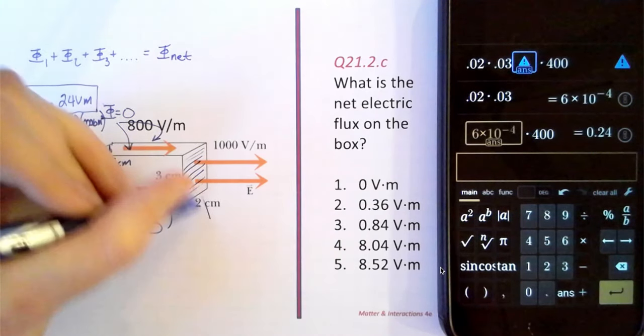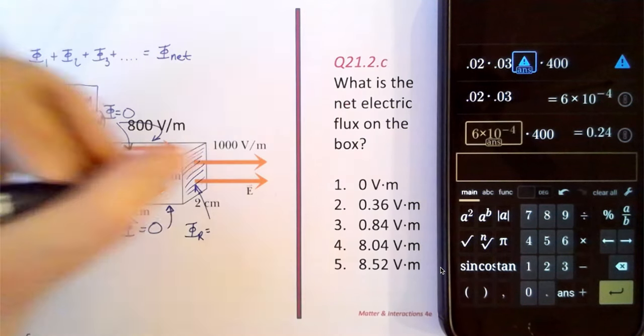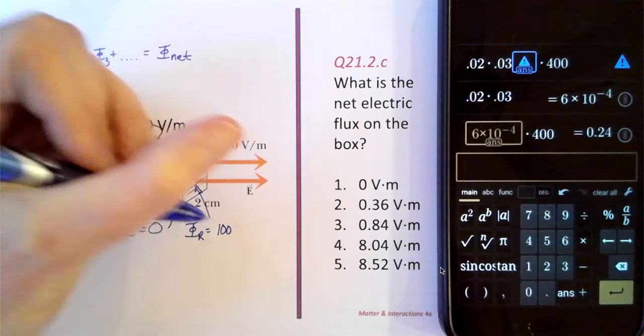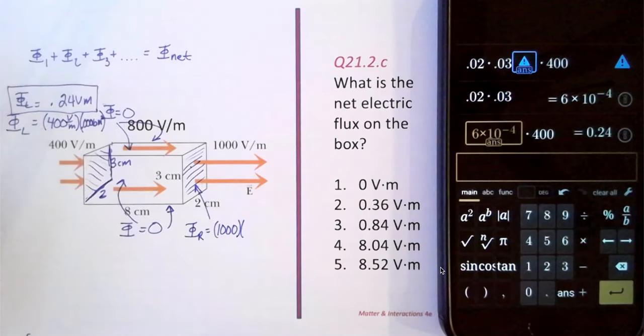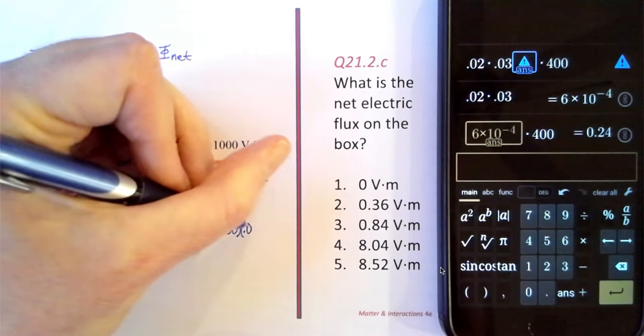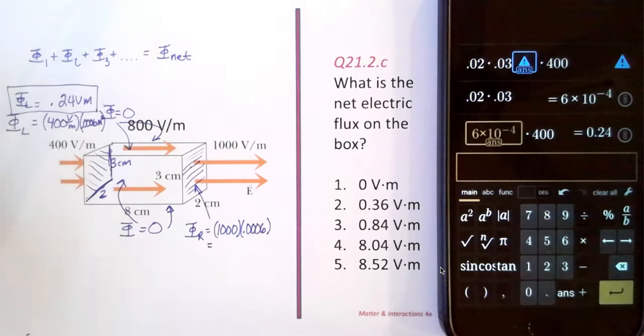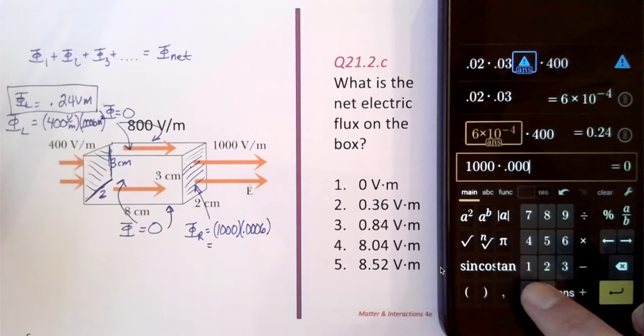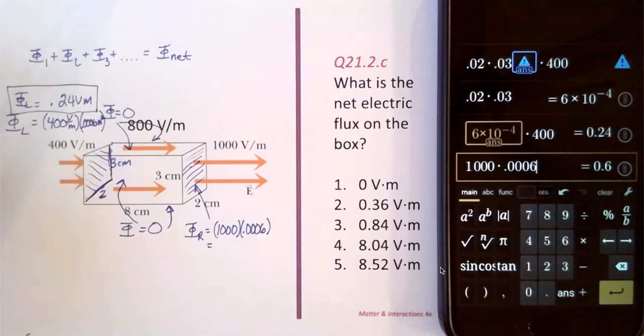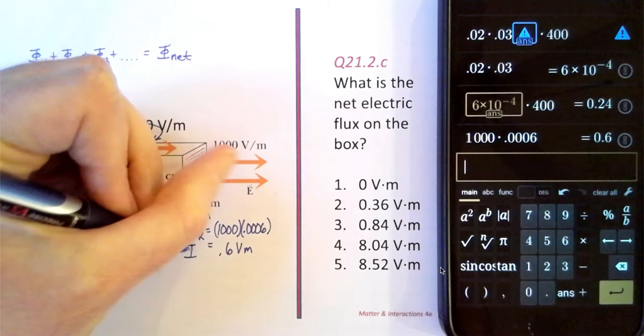Flux on the right face of the box is going to be 1,000 volts per meter times the area of that face, which happens to be the same area as the left face. So that's also going to be times 0.0006, which gets us 0.6 volt meters for the flux on the right side.